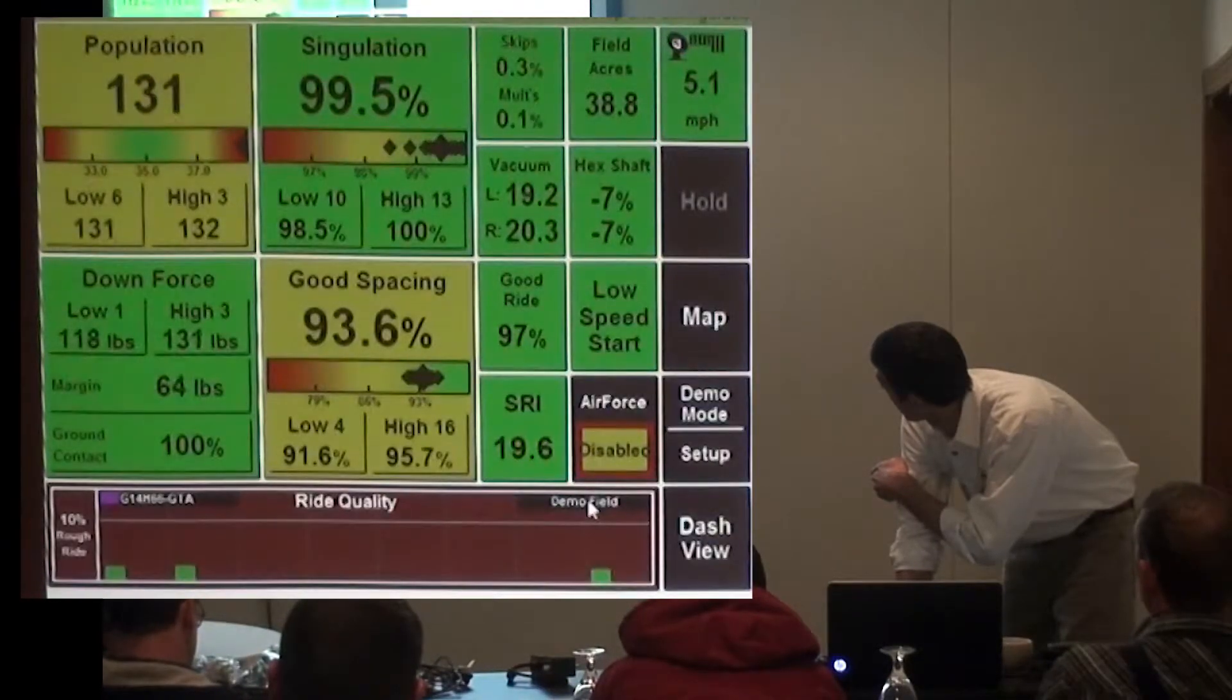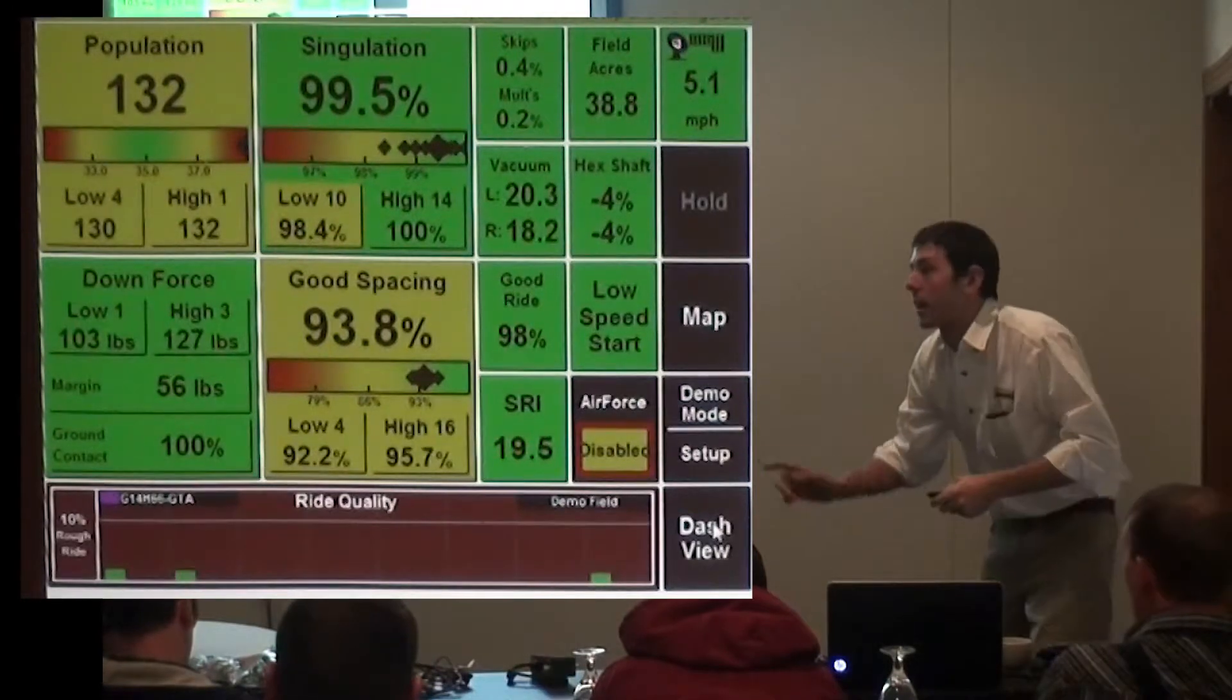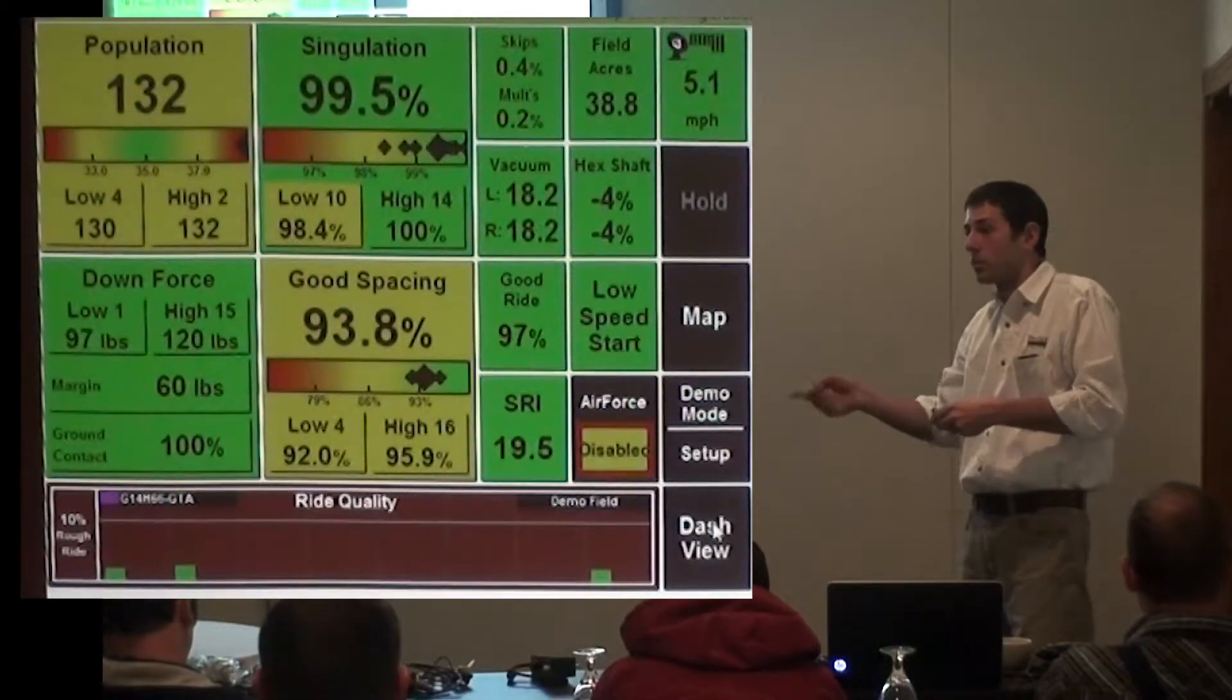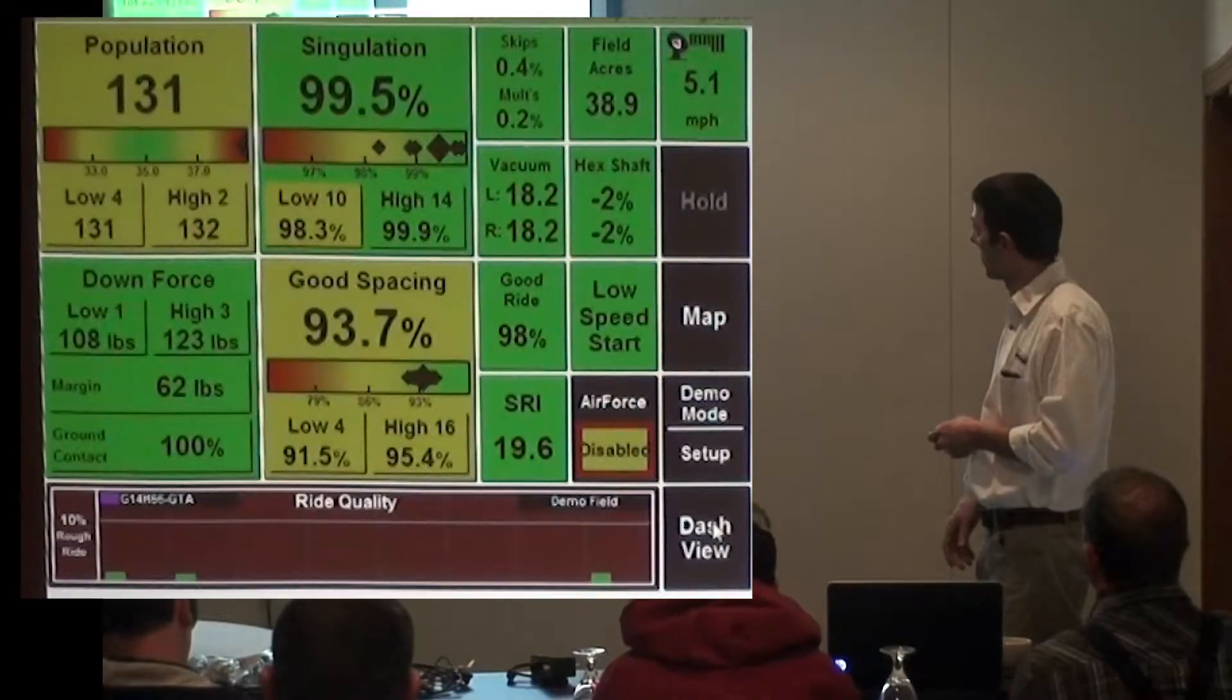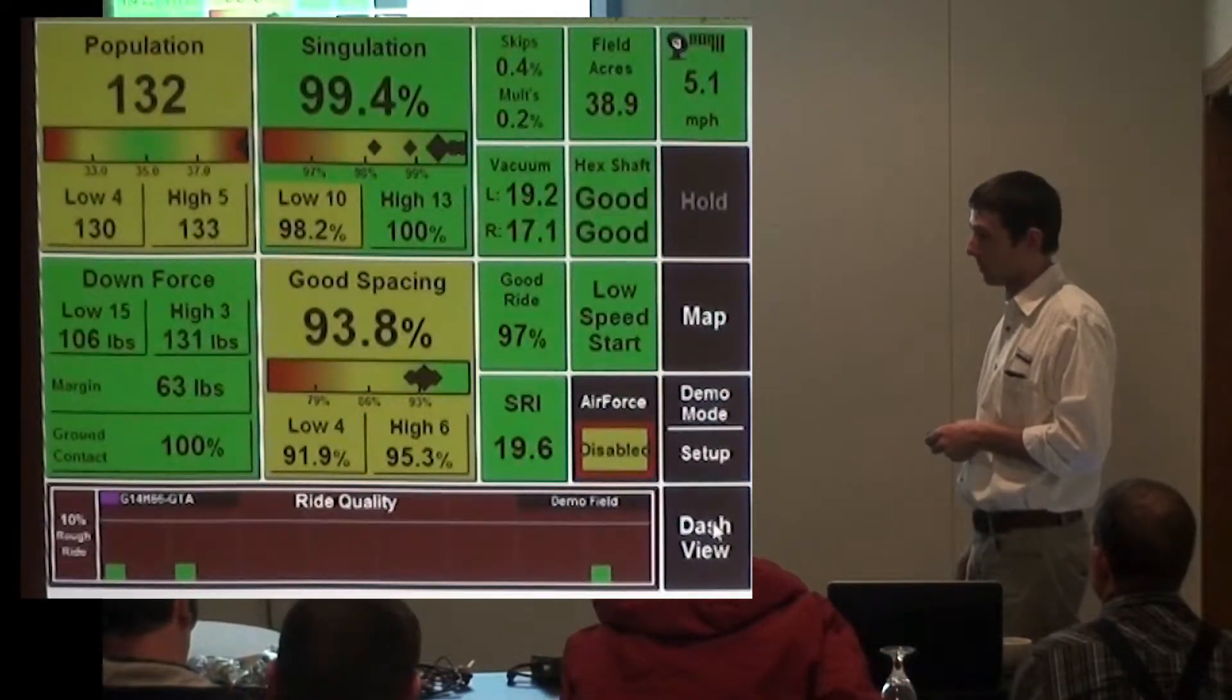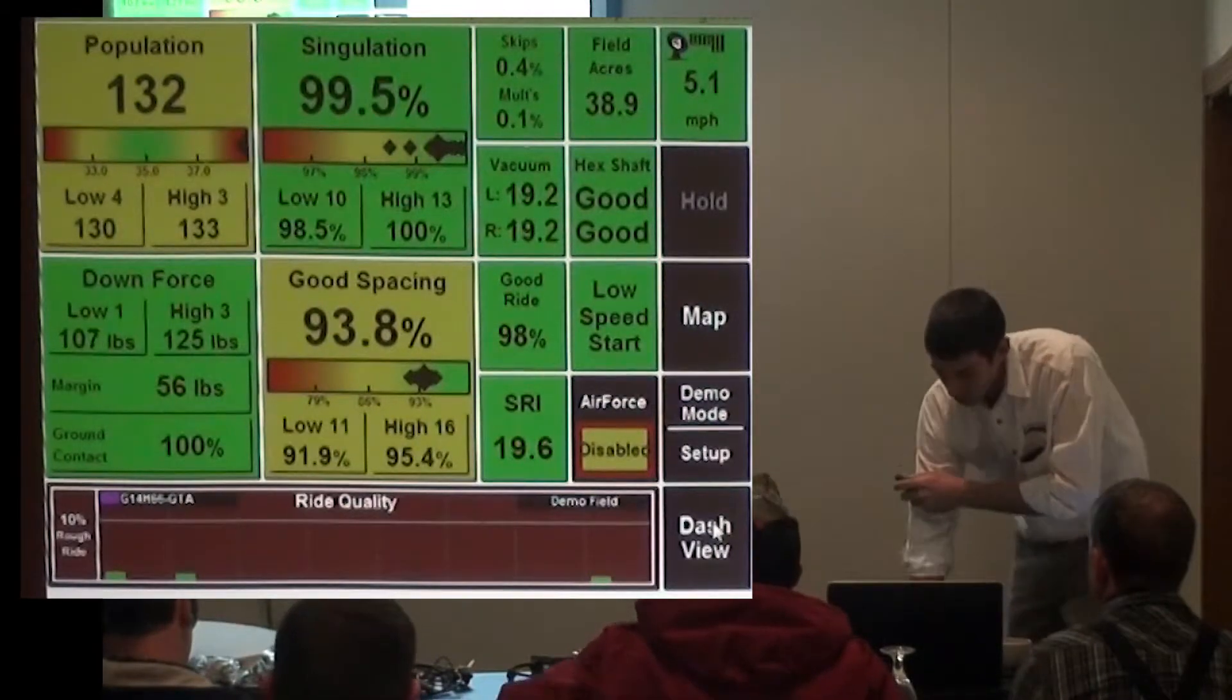You can click on any one of those to see that specific one instead of having to wait for it to cycle back through. Maybe you're particularly interested in the ride quality. You can manually force it to go to ride quality quickly.